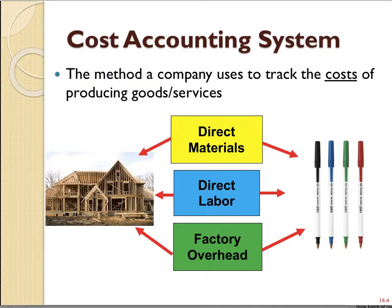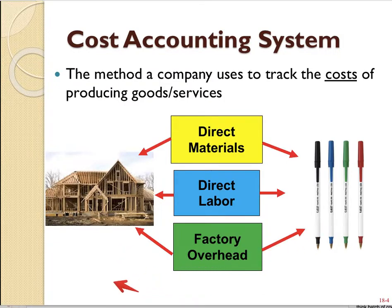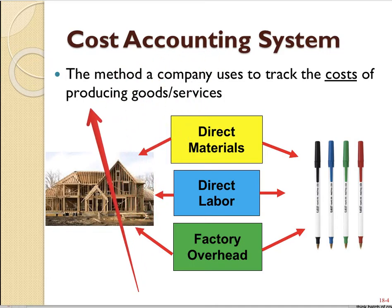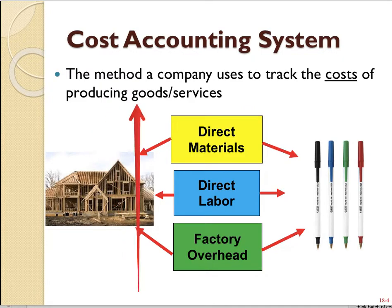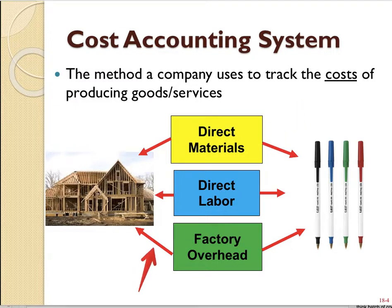There are also similarities between job order costing and process costing. No matter what the product — a custom home or pens — they all have the same three elements of inventory cost: direct materials, direct labor, and factory overhead. Both systems have the same goal: they are cost accounting systems used to track the cost of producing goods and services, and both track those same three cost elements.